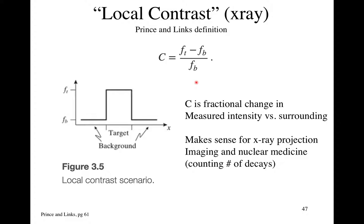Local contrast is defined in the book as follows: if you have in space a signal with a background, a target object, and a background again, local contrast is the difference in signal intensity measured between the background and the target, divided by the signal in the background. That's essentially a fractional or percentage change in signal.